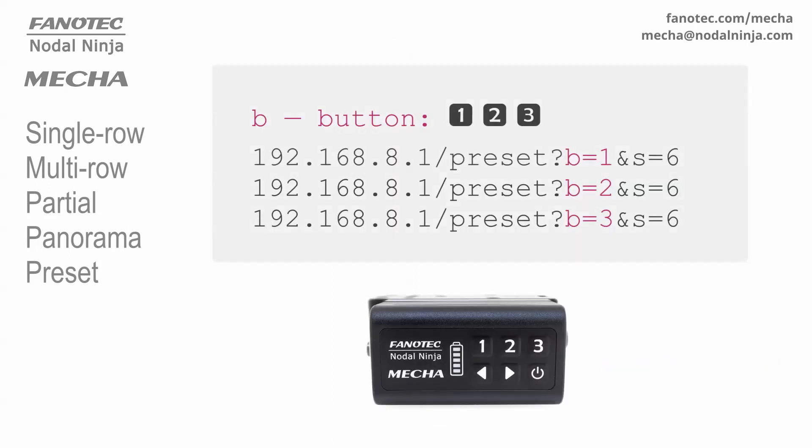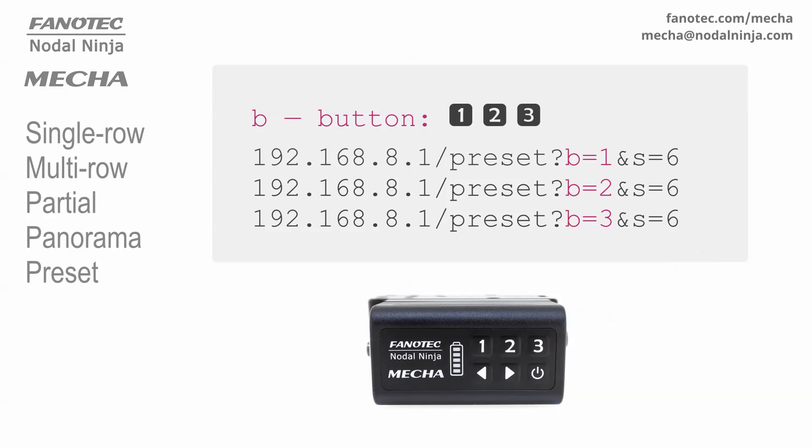Let's see now how to shoot spherical and partial panoramas. The parameters passed in the URL tell MECA how to create the preset, and they are as follows. The first parameter is B, and it tells MECA to which button to assign the preset. You will launch the preset by pressing this button and either the left or right arrow button. All possible values of the B parameter are 1, 2, and 3, as MECA controller has 3 numerical buttons. This parameter is required.